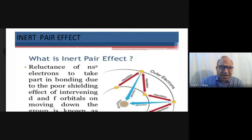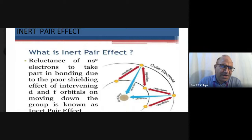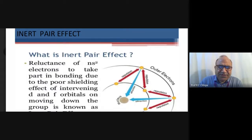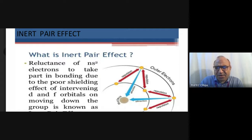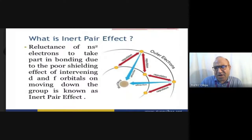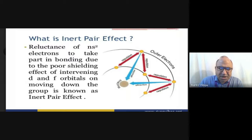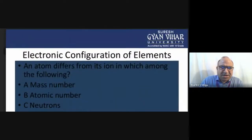The inert pair effect is another important aspect. The inert pair effect refers to the reluctance of the ns2 electrons in the outermost shell to participate in bonding. This occurs due to the poor shielding effect of intervening d and f orbitals on moving down the group. Because of this poor shielding, the inert pair effect increases going down the group, producing special compounds.